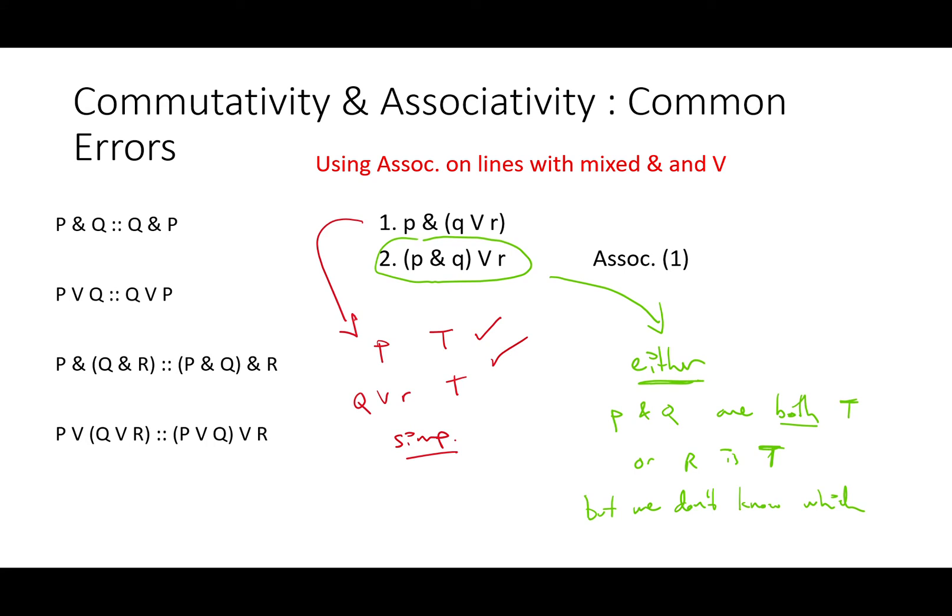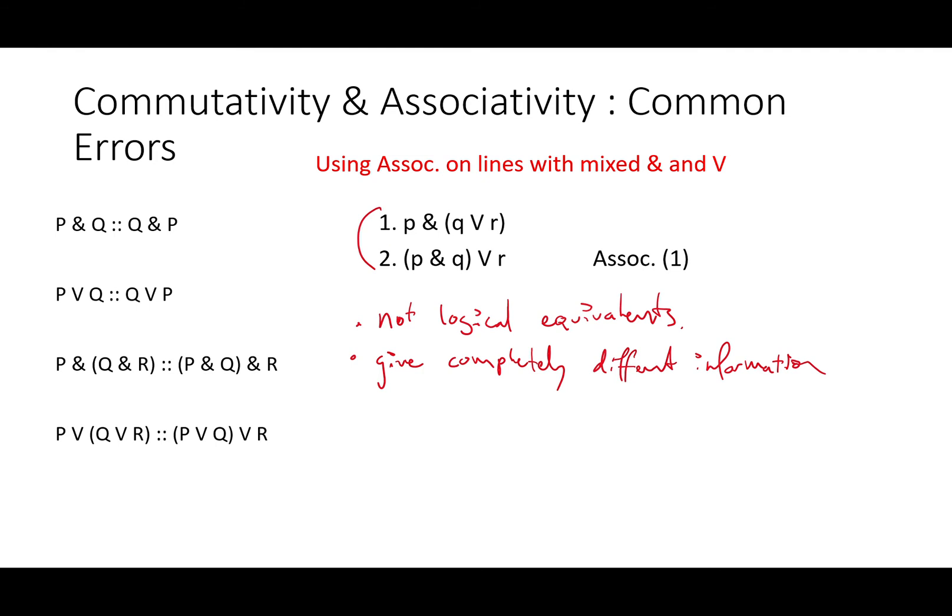Line two, however, tells us that either P and Q are both true or R is true. It, however, doesn't tell us which. These are not logical equivalents at all because they give us completely different information. They could both be true. They could both be false. We don't know. They're very separate information.